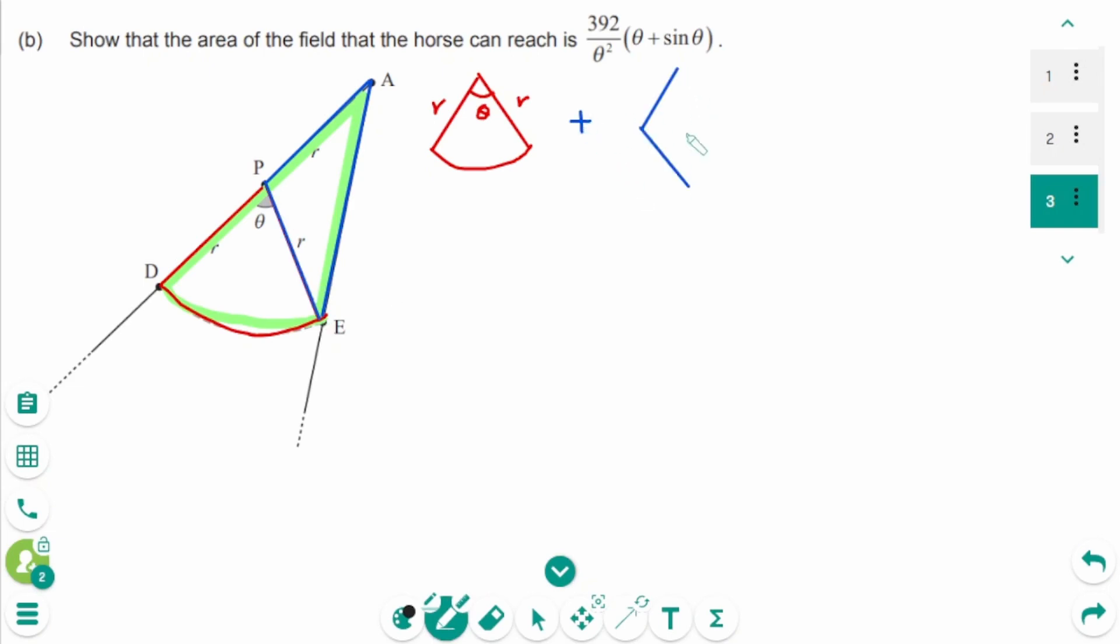Triangle PAE has side length R. Then this part is pi minus theta.